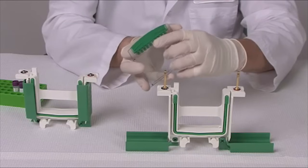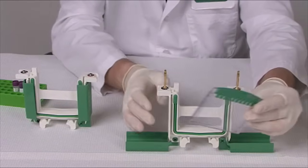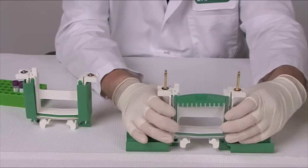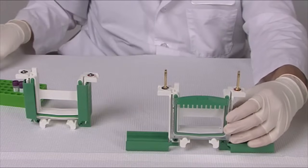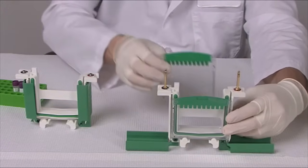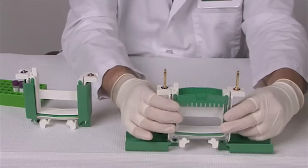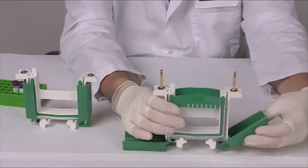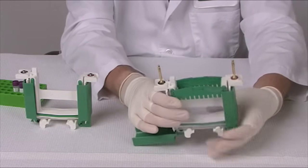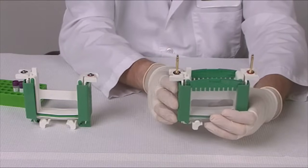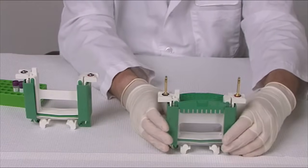Load the TGX gels with the short plate facing inside into the electrode assembly module. Then firmly grasp each wing clamp and close it, one at a time, and when both are closed, you have assembled the electrode assembly module.